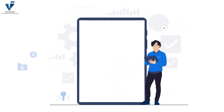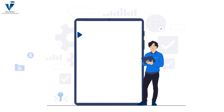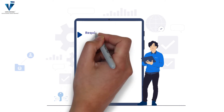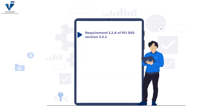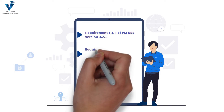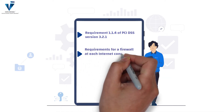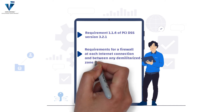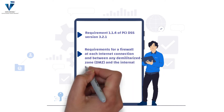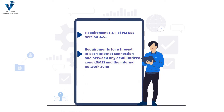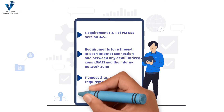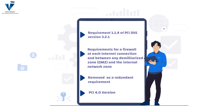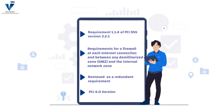Moving on, Requirement 1.1.4 of PCI DSS 3.2.1 — which required a firewall at each internet connection and between any demilitarized zone and the internal network zone — has been removed as a redundant requirement in PCI DSS 4.0.